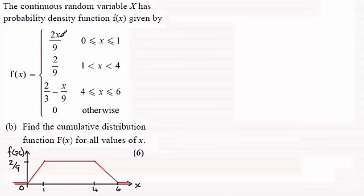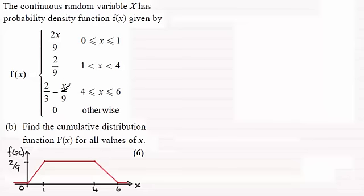What you'll notice is that we've got the interval 0 to 1 where we have 2x over 9 — a linear function. When X is 0 it's at the origin, when X is 1 it's at 2/9 as you can see here. Then it stays at 2/9 over the interval 1 to 4. Then again we've got a linear function: when X is 4, 2/3 minus 4/9 gives 2/9, and when X is 6, 2/3 minus 6/9 gives 0. It's 0 otherwise.